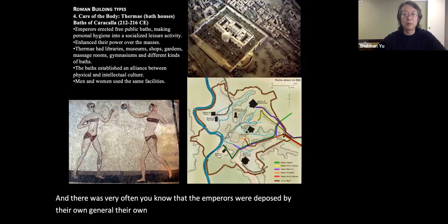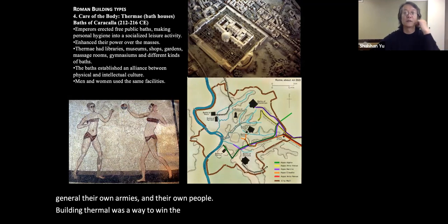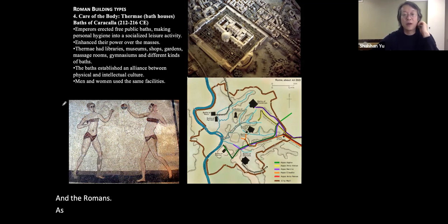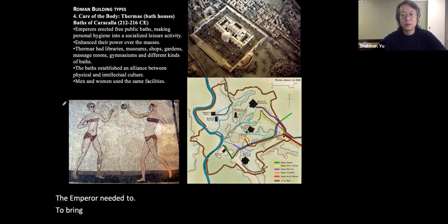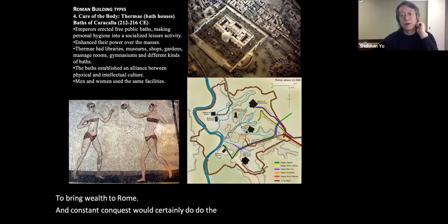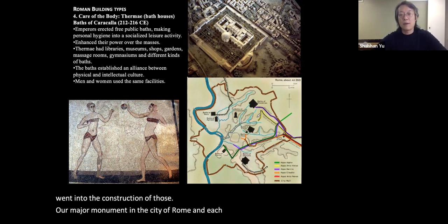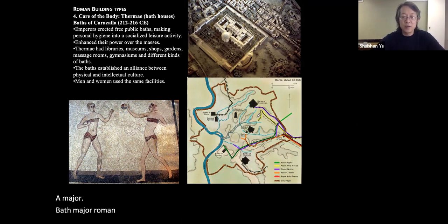The emperor needed to please his army, his generals, and even his citizens in the city of Rome to get their support. To some extent, all those conquests were to bring wealth to Rome — to make a good claim that the emperor is a good emperor and can provide a comfortable life to the citizens. Emperors were very often deposed by their own generals, armies, and people.